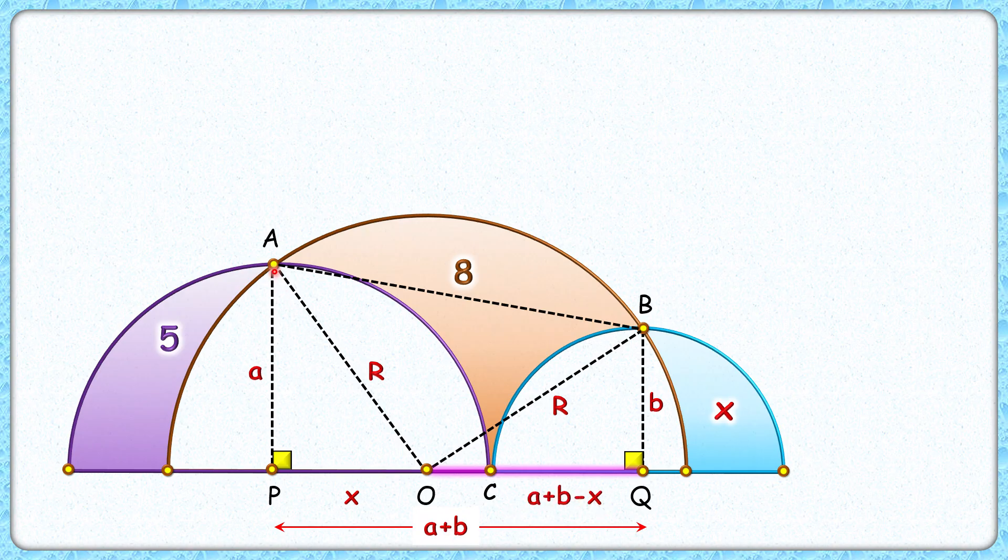Now if you look at this right angle triangle APO, applying Pythagoras theorem we'll get A squared plus X squared equals R squared.